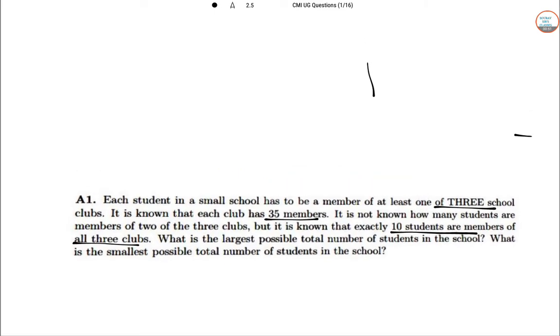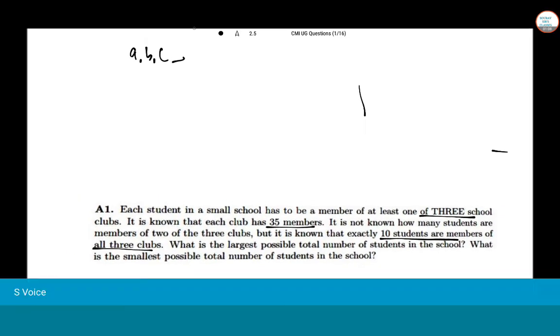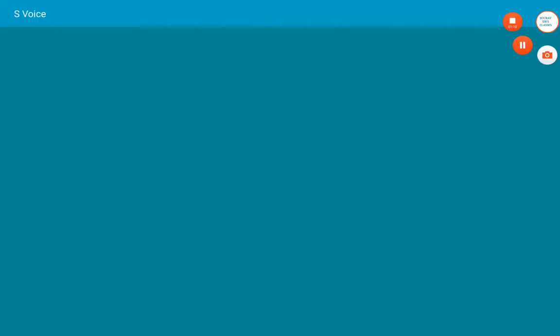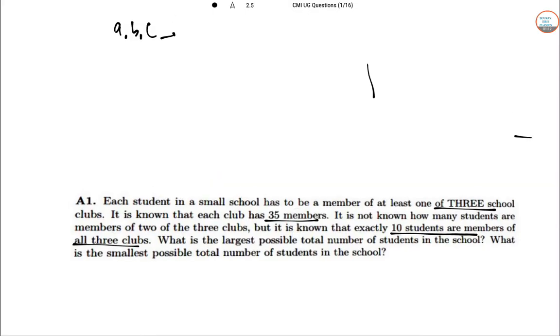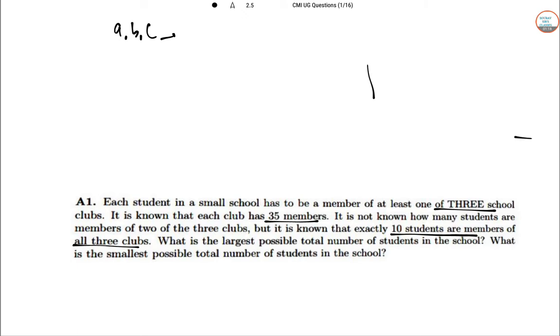So let A, B, C are the number of students. They have given the number of exactly all members of any one of these clubs X, Y, Z. So let A, B, C means exactly A, B, C means exactly one of the clubs, exactly one.